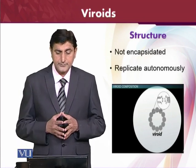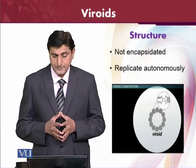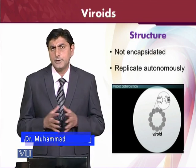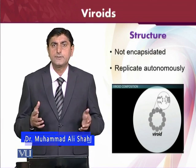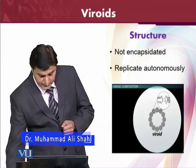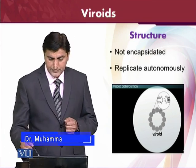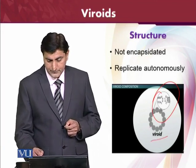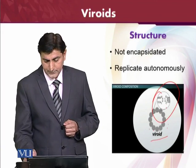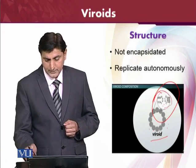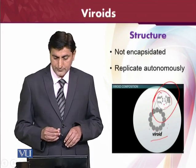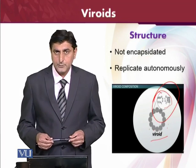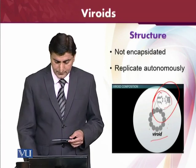Now, what is the structure? Just like here, you can see in the diagram — they are non-encapsidated and they are able to replicate autonomously. They can just replicate autonomously, and here you can see the basic structure provided. This is the viroid and it is composed of just simple RNA, which is very simple to study and very simple to manipulate for different kinds of investigations.